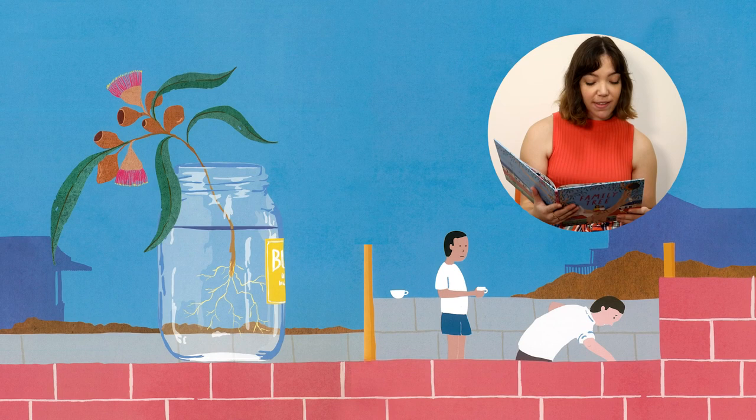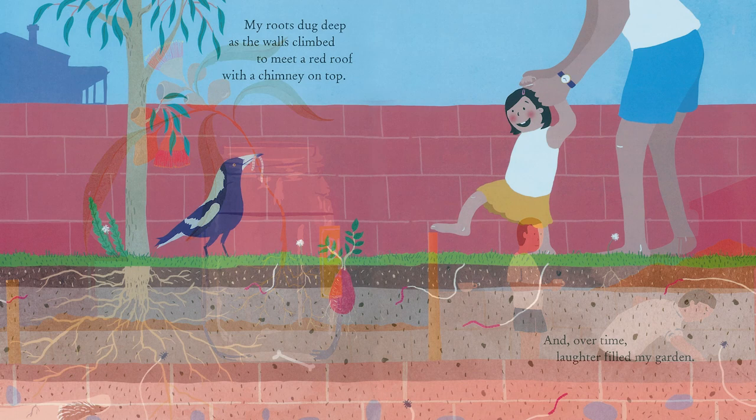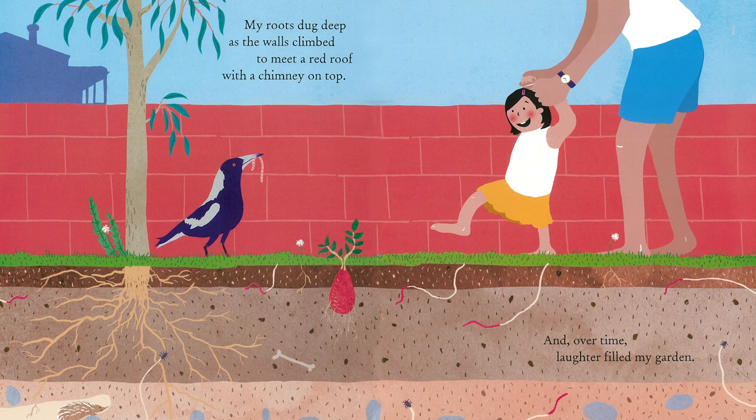It started with a seed and that seed was me. I grew day by day as red bricks were laid. My roots dug deep as the walls climbed to meet a red roof with a chimney on top. It looks like the tree is growing just as the little girl is growing.